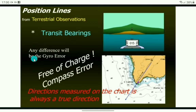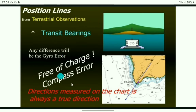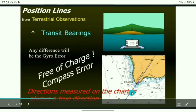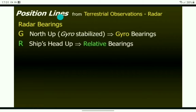Let's talk about transit bearings. Two objects are described as being observed in transit when they can be seen in a direct line with each other. Next, we talk about radar ranges and radar bearings from terrestrial observation using the radar.